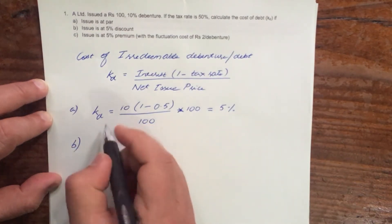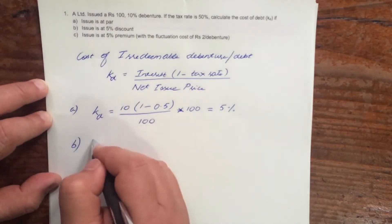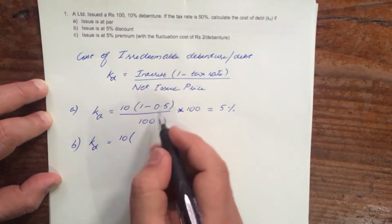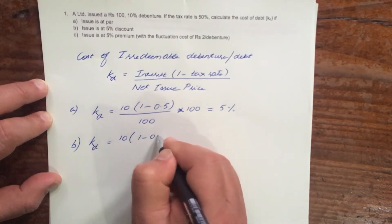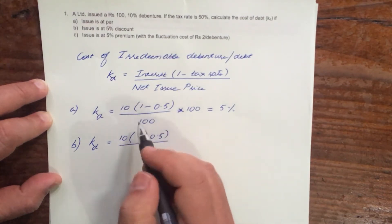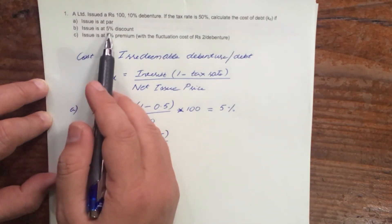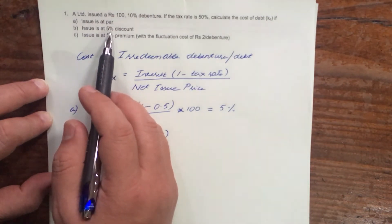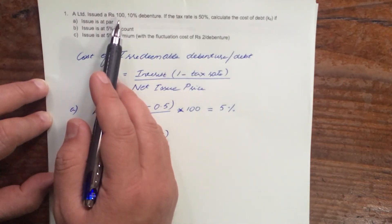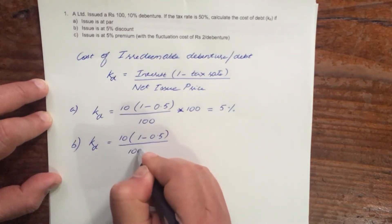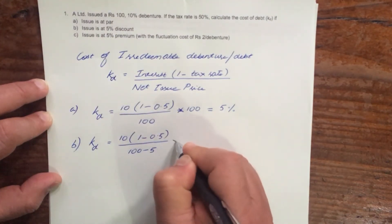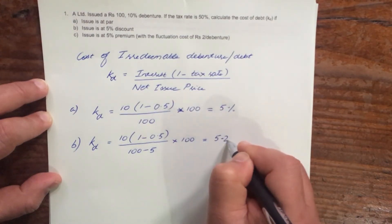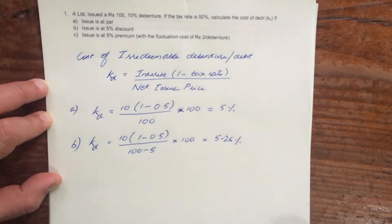Now B, issue is at 5% discount. So Kd equals 10 times (1 - 0.5), the interest and tax rate remain the same. The issue is at 5% discount - that's 5% of 100, which is 5 rupees. So the net issue price is 100 minus 5. If you do your calculation, it will be 5.26%.